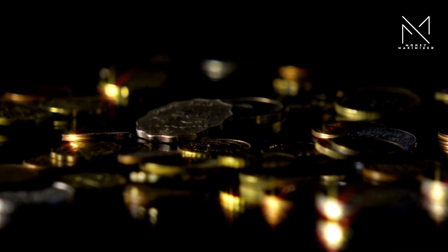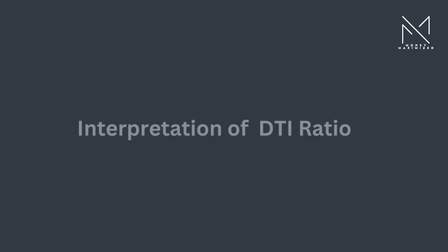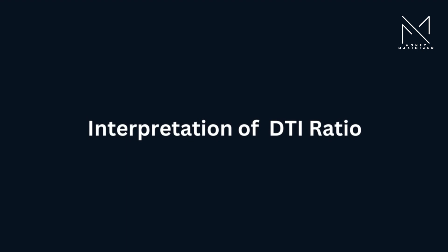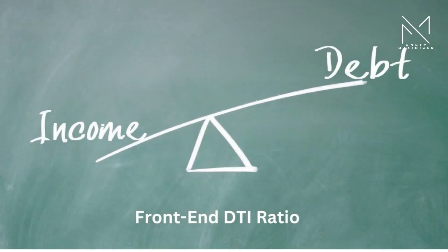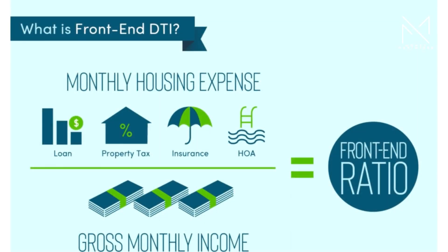Interpretation of the DTI ratio — front-end DTI ratio: this considers only housing-related debt. It's calculated as the front-end DTI ratio by dividing monthly housing expenses by gross monthly income.